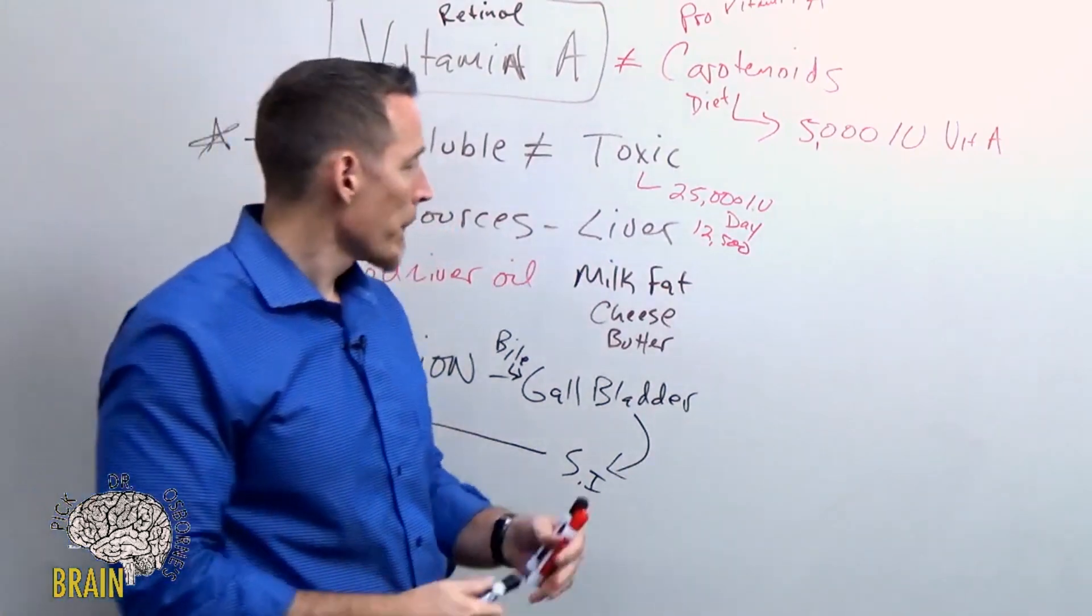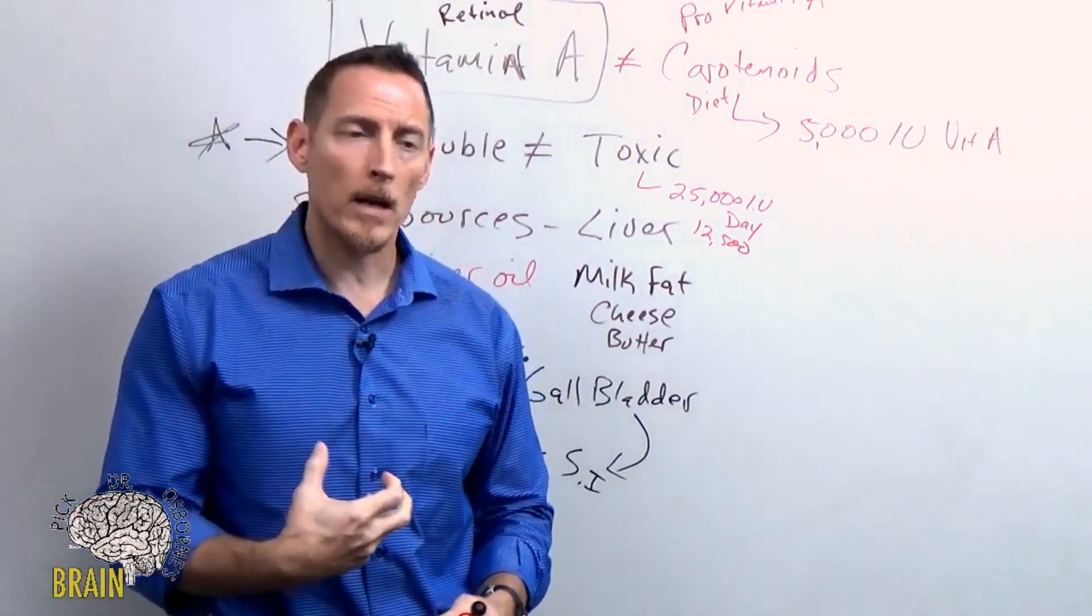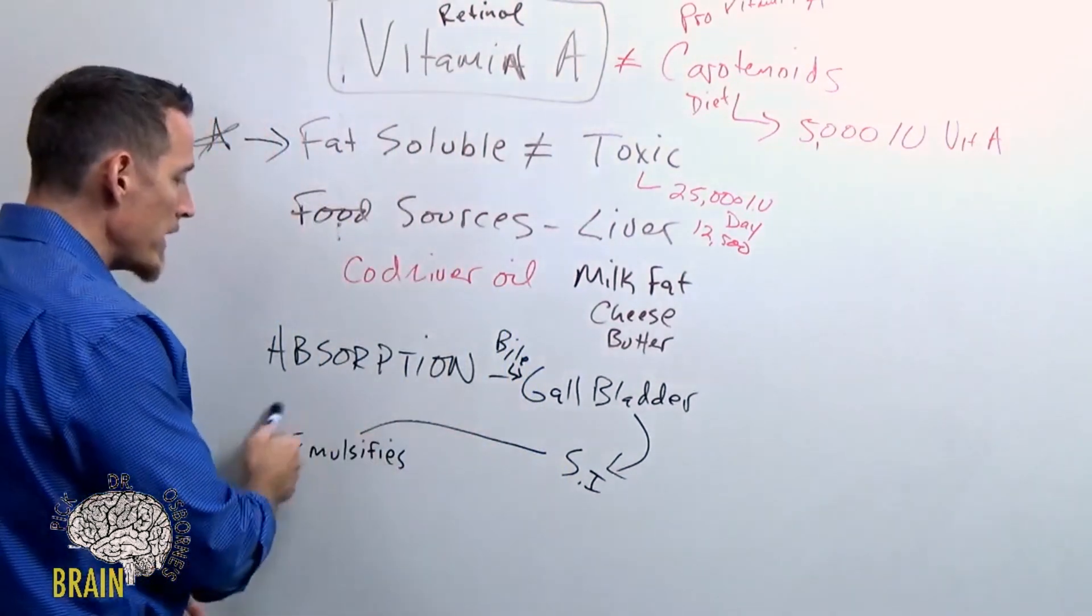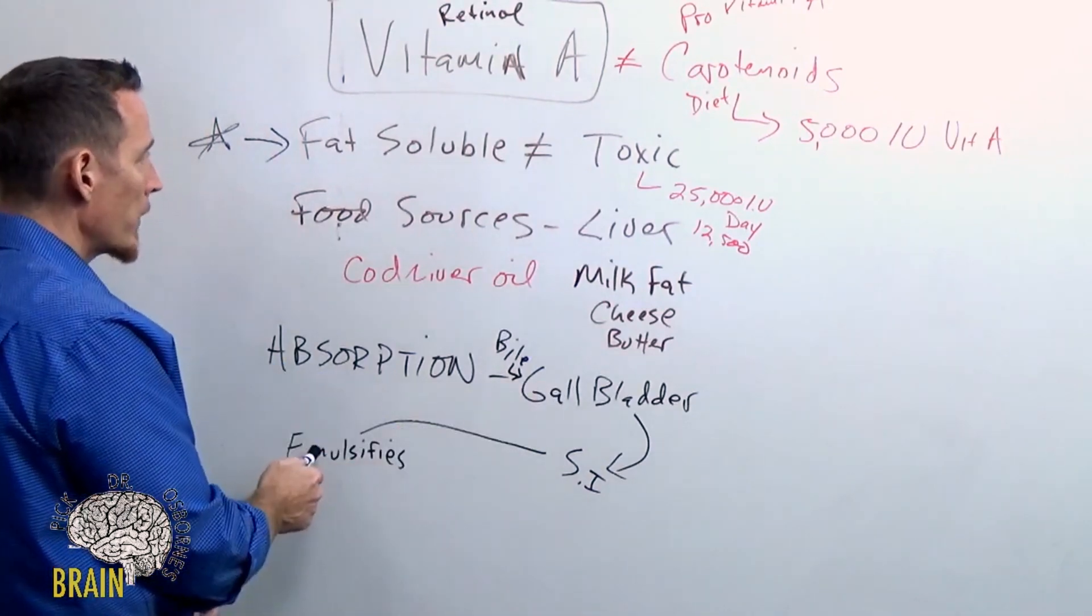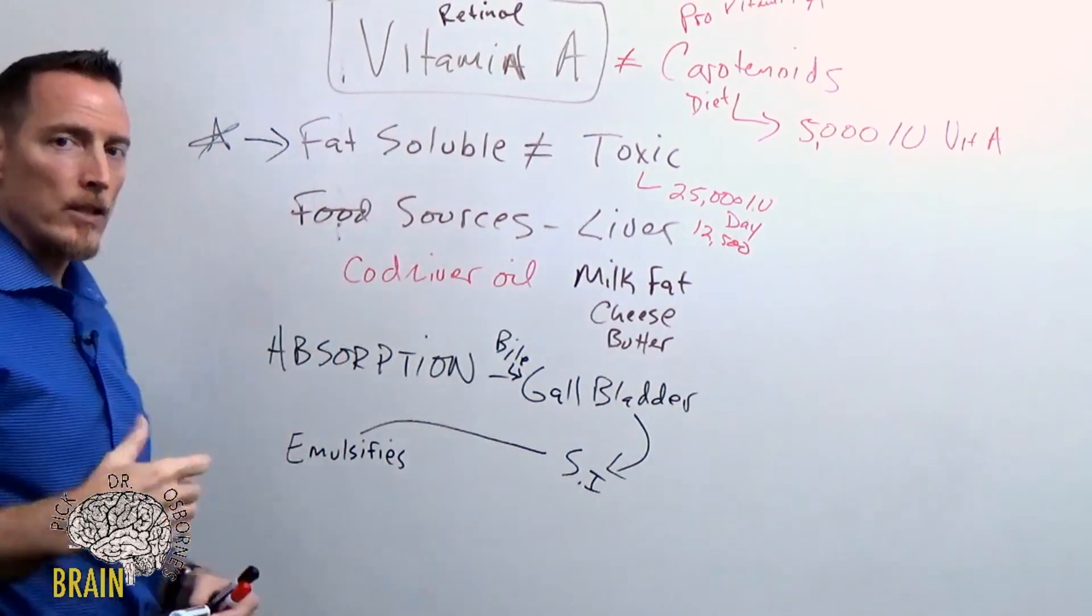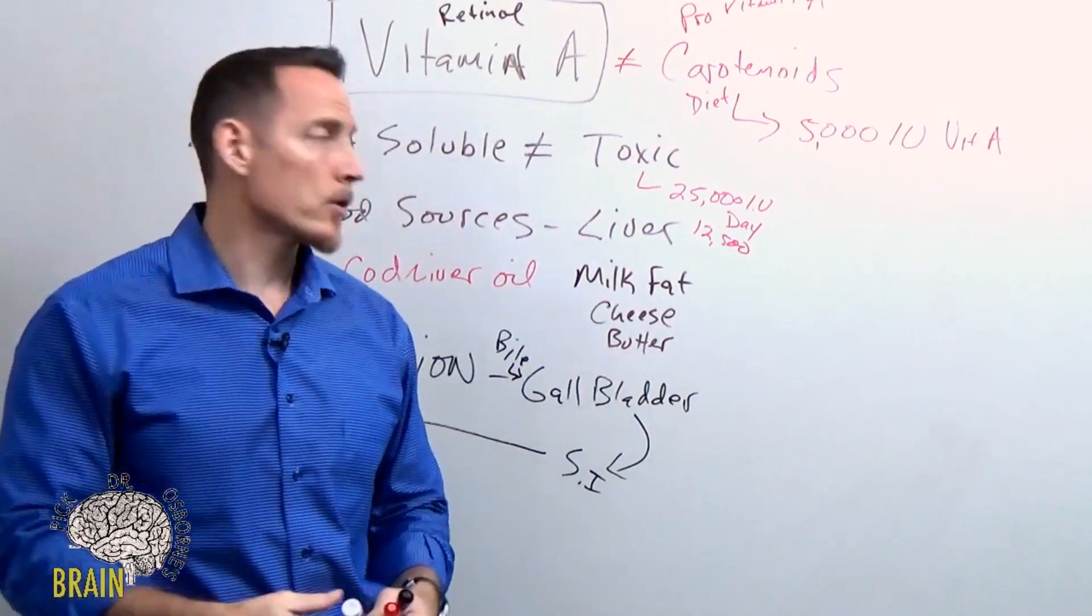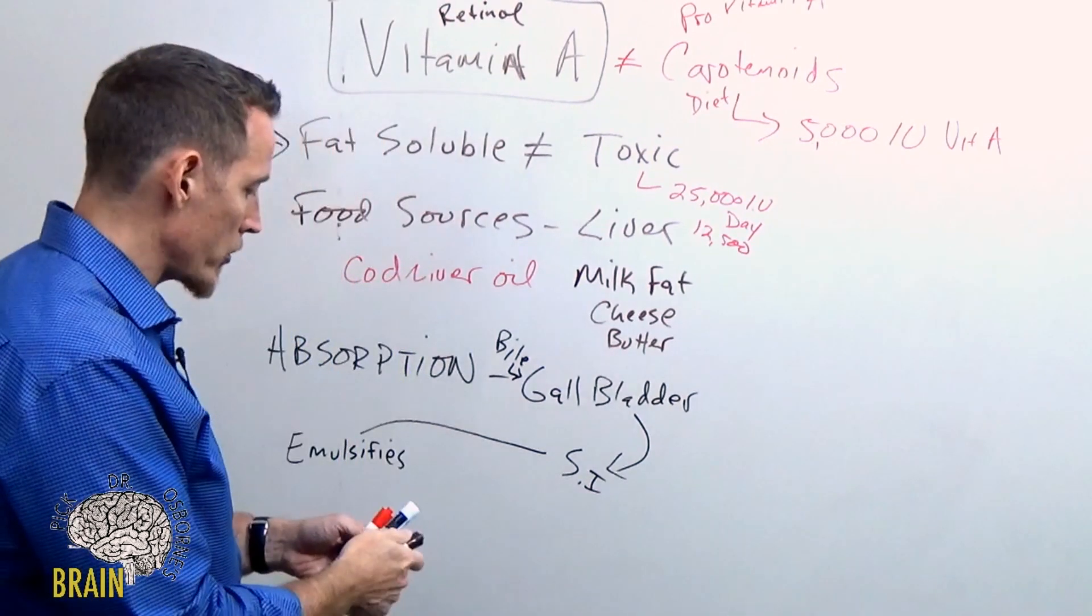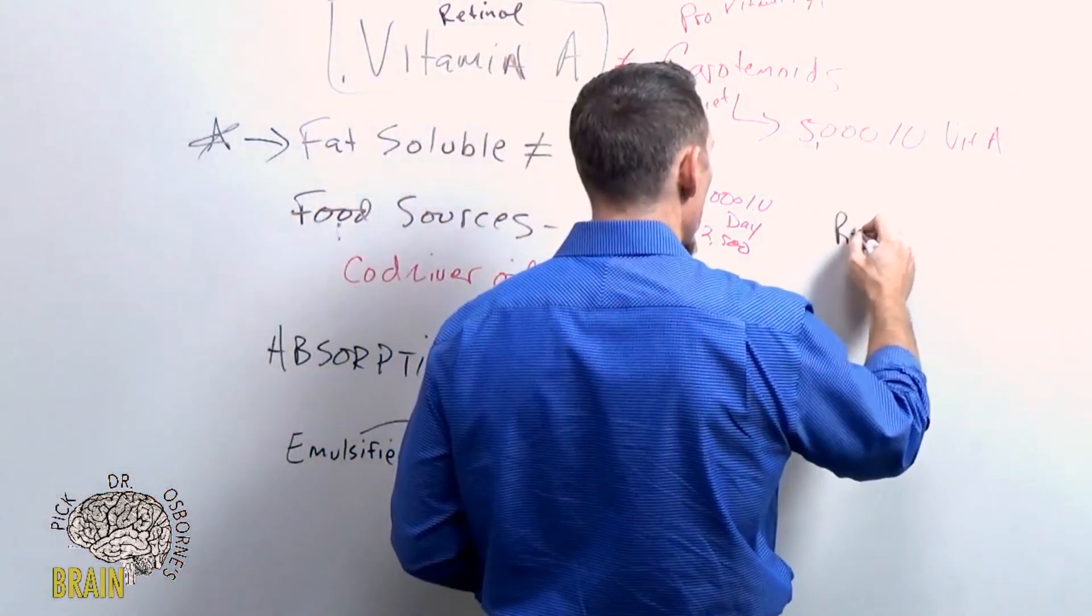Now, I said earlier that vitamin A is critical for gut function. Let's talk about why that is. If we need to convert a fat into water through the gallbladder's bile to get absorption, then what does vitamin A actually do once it's in our body? Well, one of the things vitamin A does is it helps to regenerate epithelial tissue. Now, what the heck does epithelial tissue mean? It regenerates...